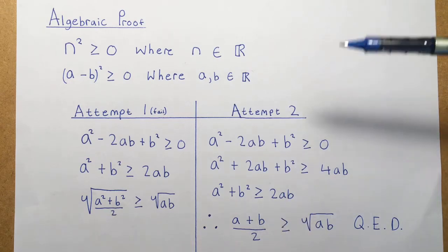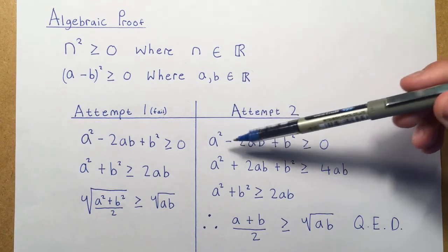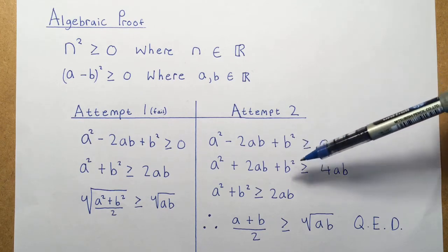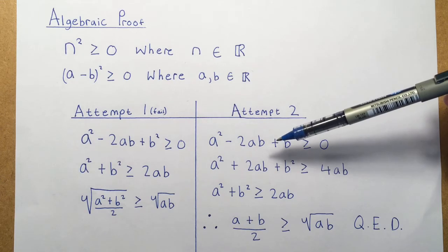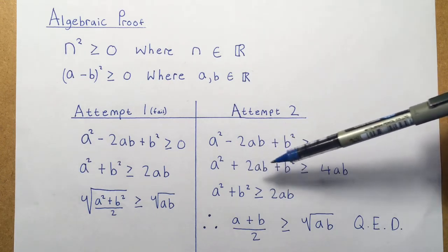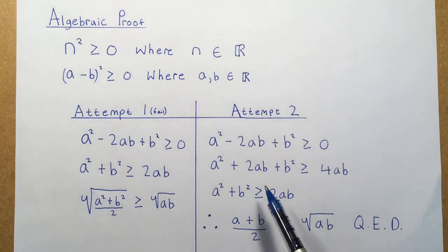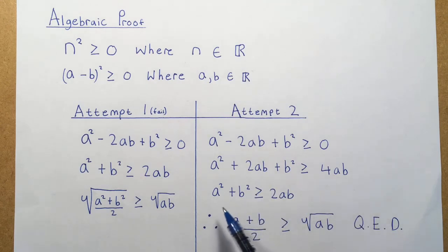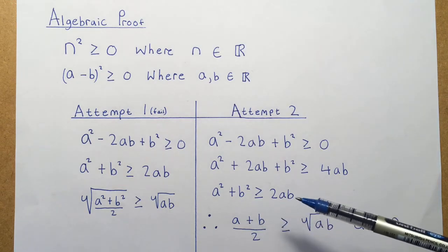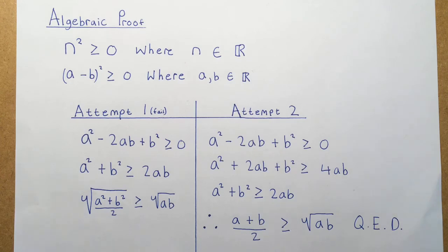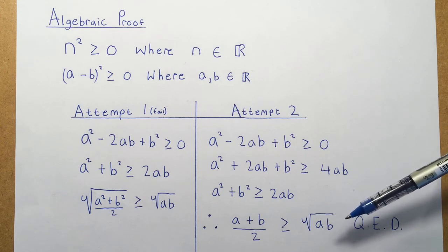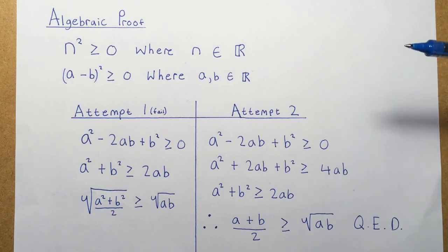But there is a better way of doing this. So as before, we expand the bracket, a squared minus 2ab plus b squared is greater than or equal to zero. But instead of adding 2ab to both sides, we'll add 4ab. So we'll get a squared plus 2ab plus b squared is greater than or equal to 4ab. Now this looks more promising. And then we can just square root both sides and divide both sides by 2 and we get a plus b divided by 2 is greater than or equal to the square root of ab. So we've just derived the arithmetic geometric mean inequality for two real numbers. And there you go.